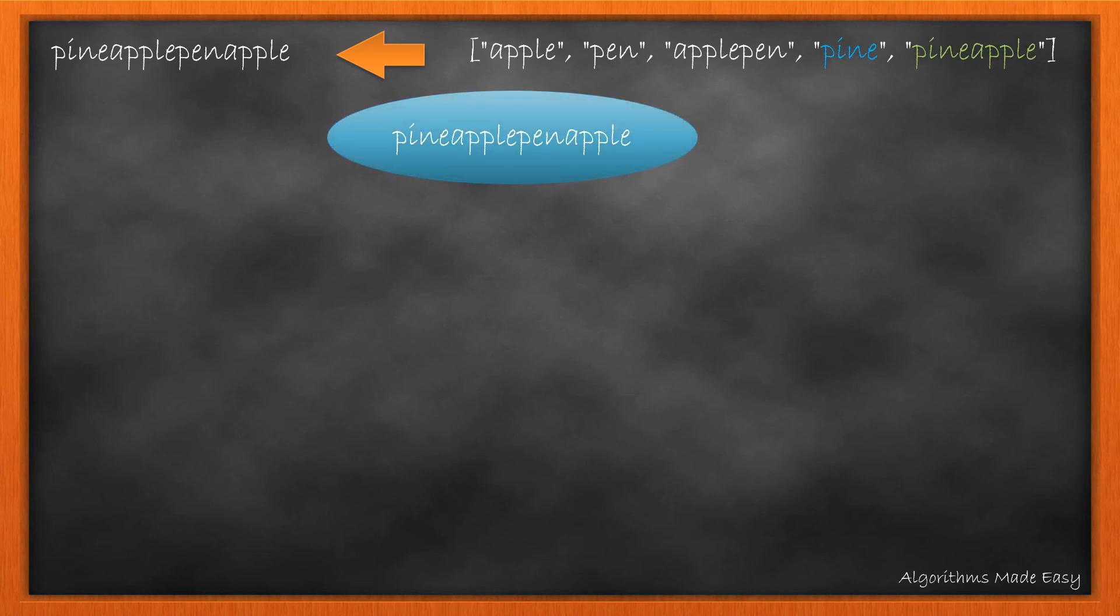Let's take the first example and try to picturize the process. We need to create this word from the given set of words in the dictionary. At the start, we will have the whole word. For this word, if we look into the dictionary, try finding words it is starting with, we get pine and pineapple.